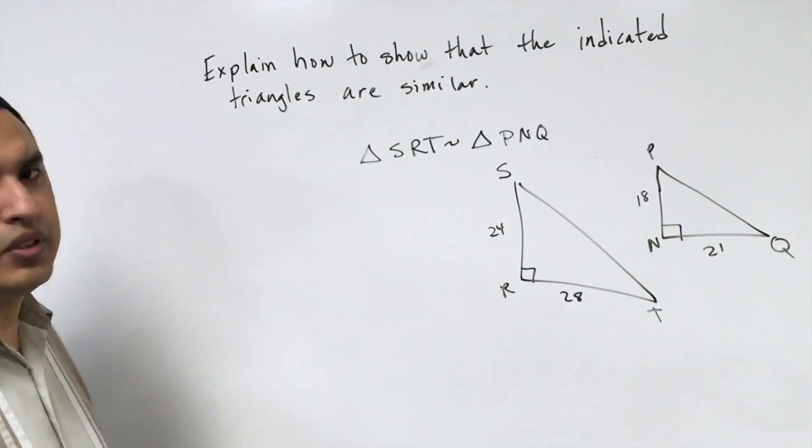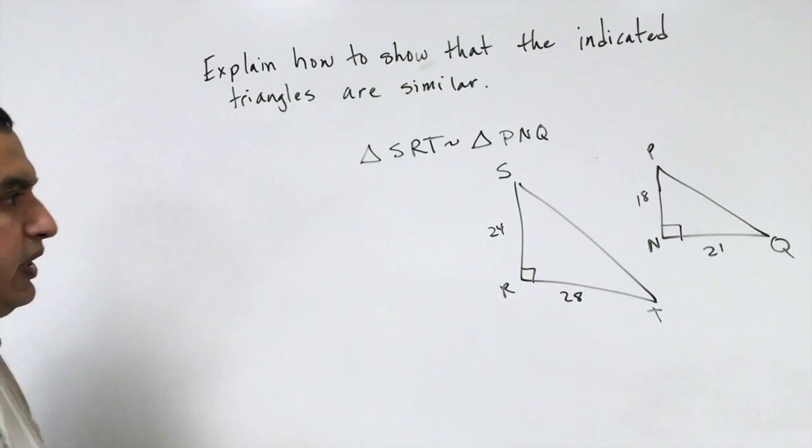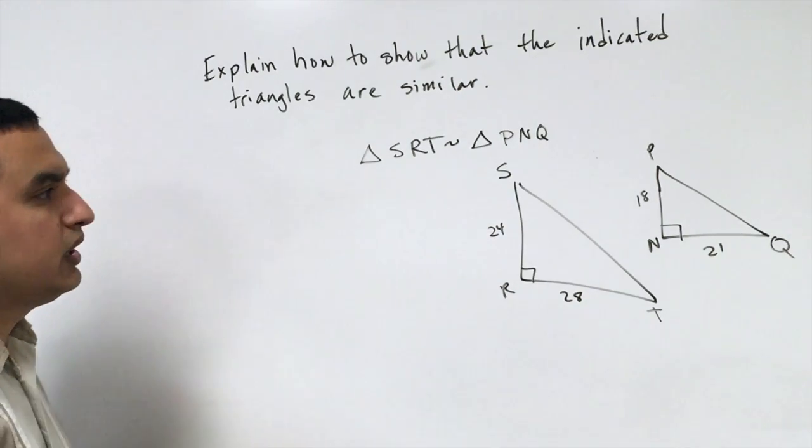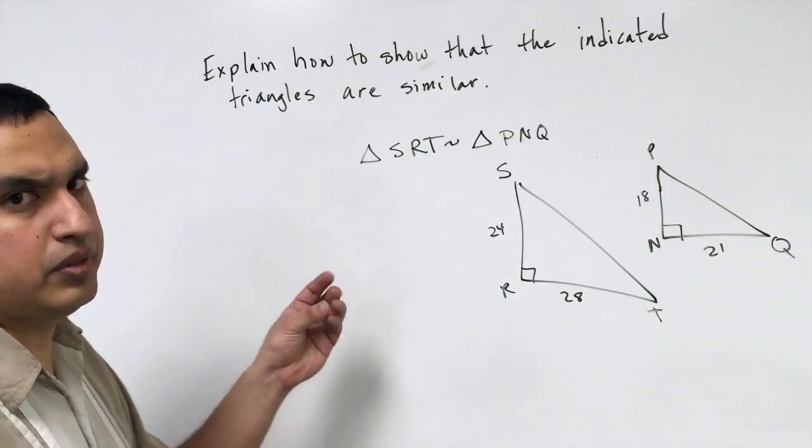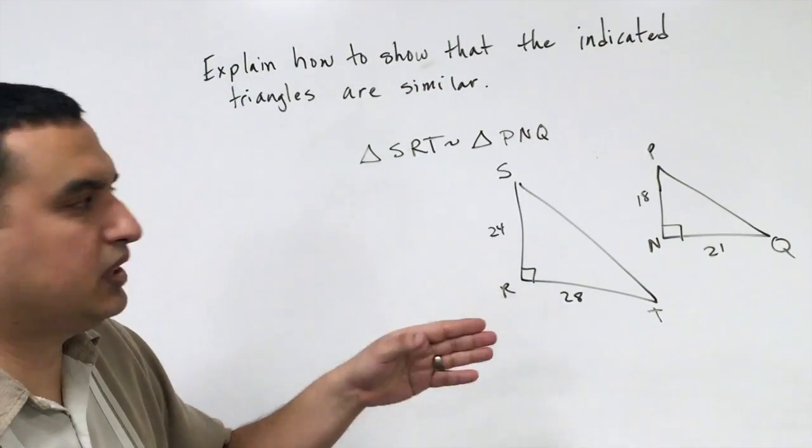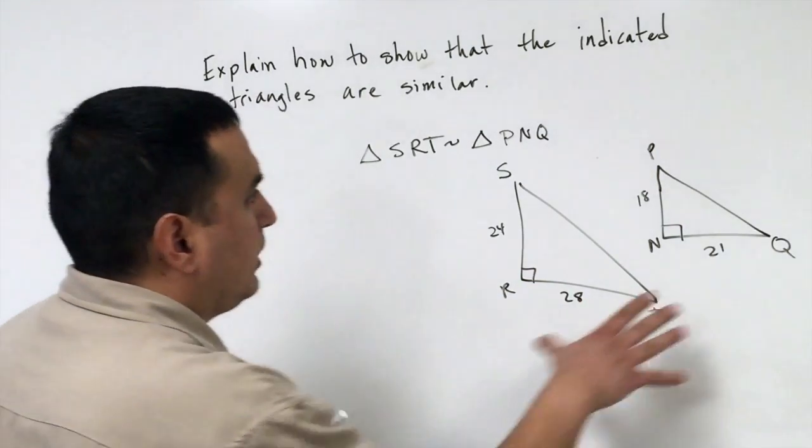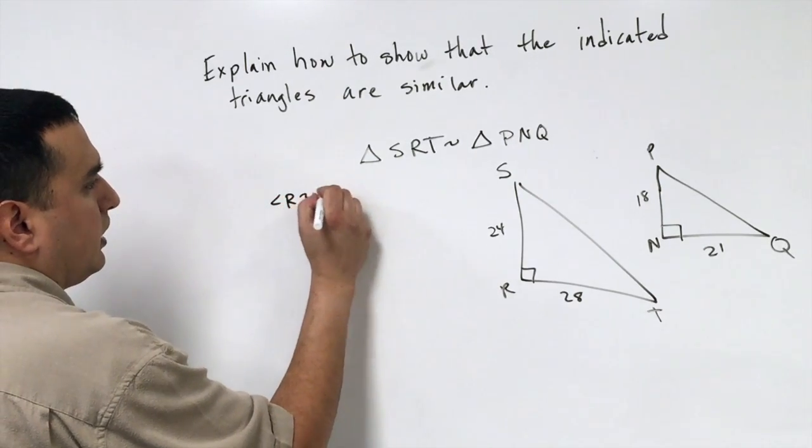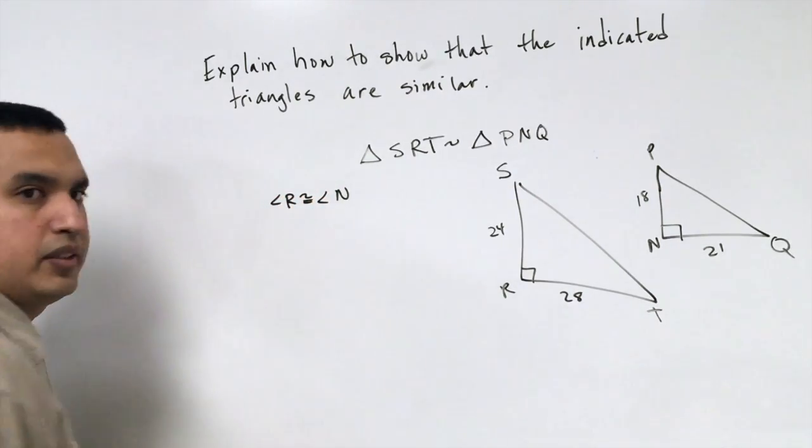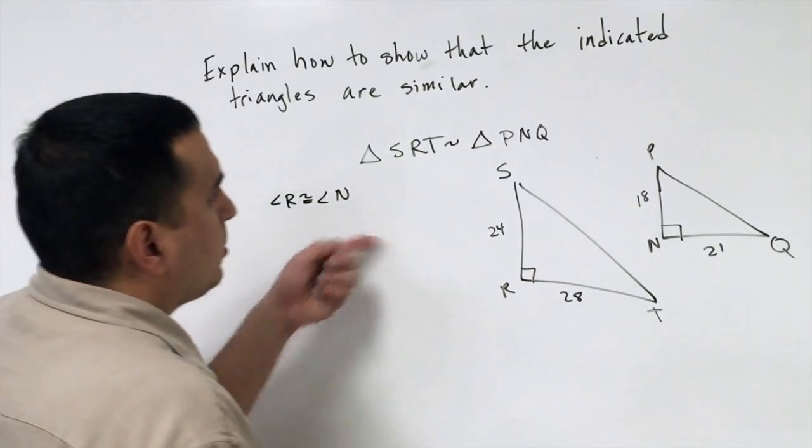For this problem, we're going to use what's called the Side-Angle-Side similarity theorem. What that says is that if I have a pair of angles that are congruent, and the sides that make up that angle are proportional or similar to the corresponding sides of the other triangle, then the triangles are similar. So in this example, I know that angle R is congruent to angle N, because they're both 90 degree angles. Now I have to look at the corresponding sides.